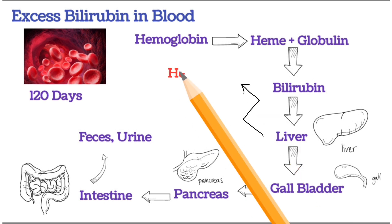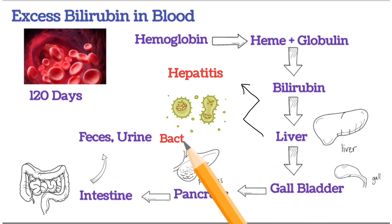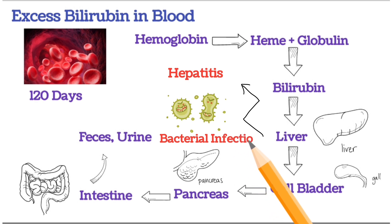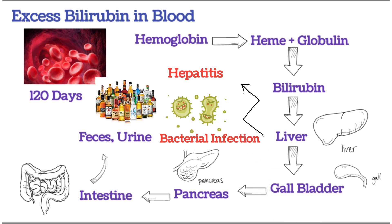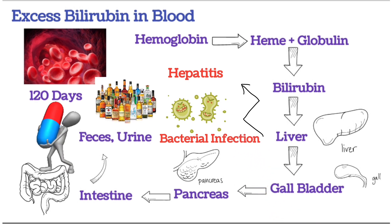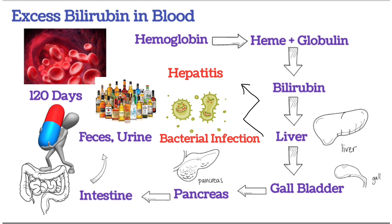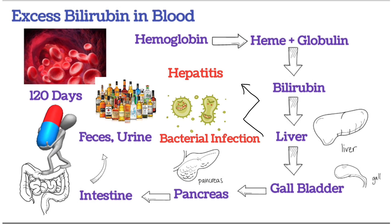for example, if there is hepatitis virus infection or bacterial infection, or people who drink excessive alcohol, or over drug consumption like acetaminophen, these conditions cause damage to the liver, resulting in accumulation of bilirubin.